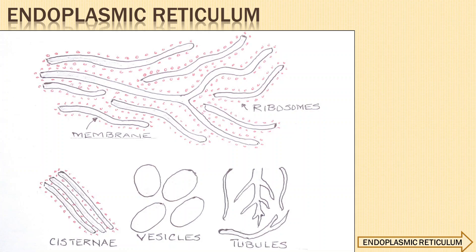Vesicles are oval, membrane-bound, vacuolar structures present in the cytoplasmic matrix. They too are devoid of ribosomes. The membrane of endoplasmic reticulum has a thin and transparent phospholipid bilayer with inner and outer dense layers of protein. The membrane remains in contact with the plasma membrane, nuclear membrane and Golgi complex.